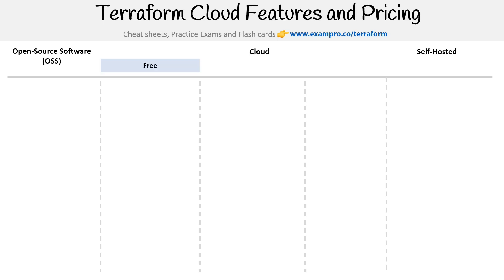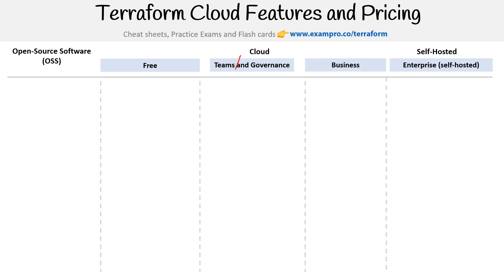Under these tiers, we have free, teams, and teams and governance — they are two separate plans but displayed together in the marketing content. Then you have business, and enterprise, which is considered self-hosted.